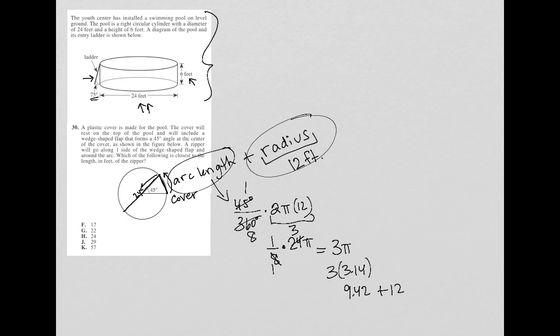So then 12 plus 9 is 21, but I still have that 0.42. And the question does say which of the following is the closest, not the exact. So 21.42 is closest to choice G, which would be 22.